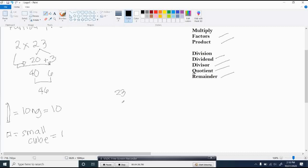So 23 will give you 1, 2 longs and 1, 2, 3 ones. So since it will be multiplied by 2 groups, make another set. Another 2 longs and another 3 ones.